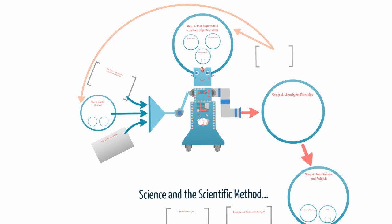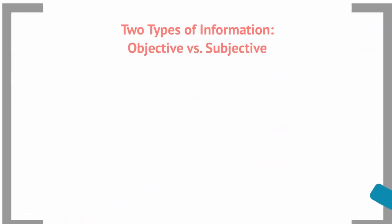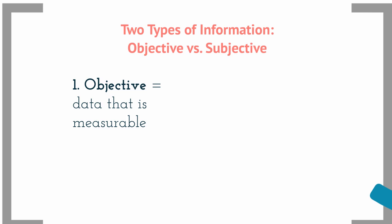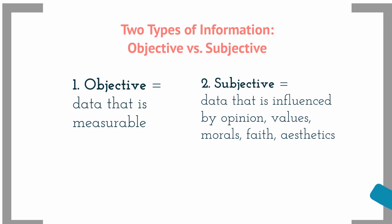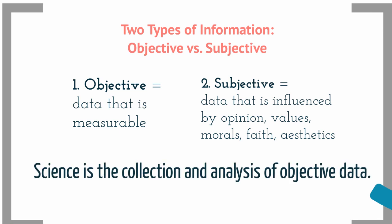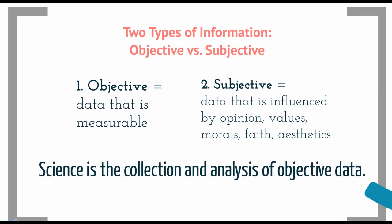Let's start with the idea that there are two types of information: objective information and subjective information. Objective is information or data that is measurable. Subjective is data or information that's influenced by opinion, values, morals, faith, or aesthetics — meaning what something looks like. You can look at a sunset and think it's beautiful, or look at a painting and think it's not art while someone else thinks it's amazing. That's subjective. Science is the collection and analysis of objective data.